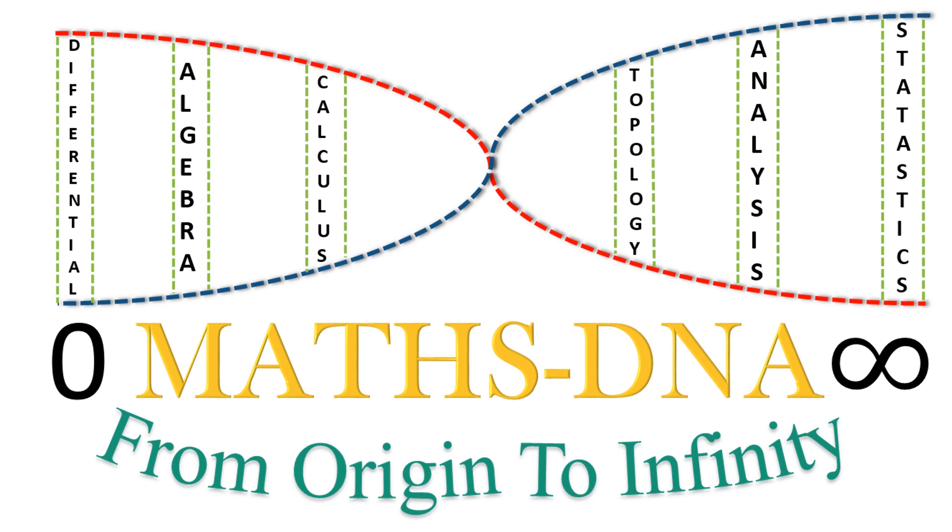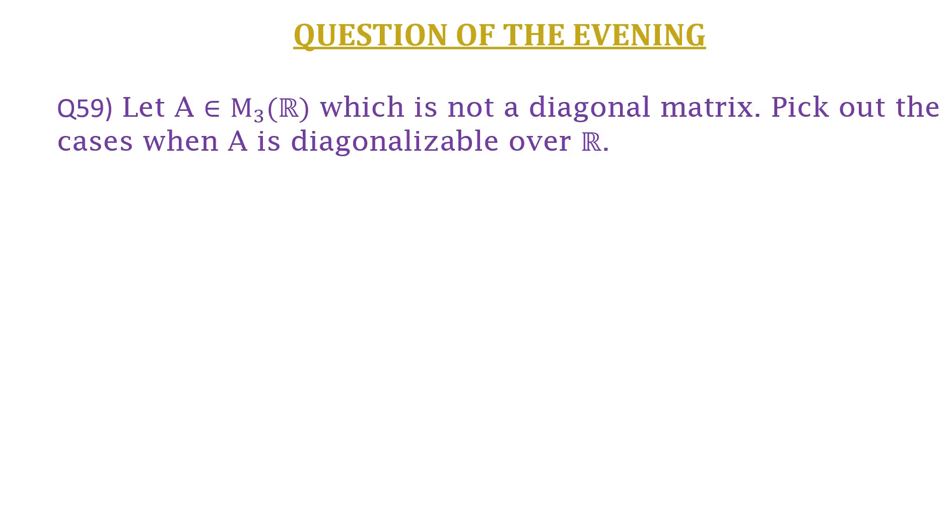Hello and welcome to my YouTube channel Math DNA from Origin to Infinity. In this video we are going to discuss a question on diagonalization for matrix A belonging to M₃(ℝ), a 3×3 matrix with real entries which is not a diagonal matrix. Pick out the cases when A is diagonalizable over ℝ.